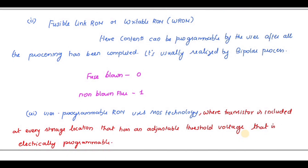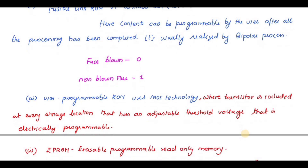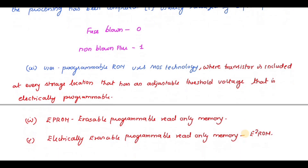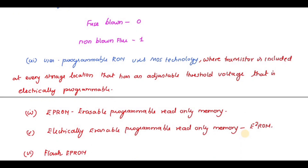Next is Programmable Read-Only Memory (PROM), which uses MOS technology where a transistor is included at each storage location and it has an adjustable voltage — that is, it is electrically programmable. The fourth type is Erasable Programmable Read-Only Memory (EPROM), where the content can be erased.